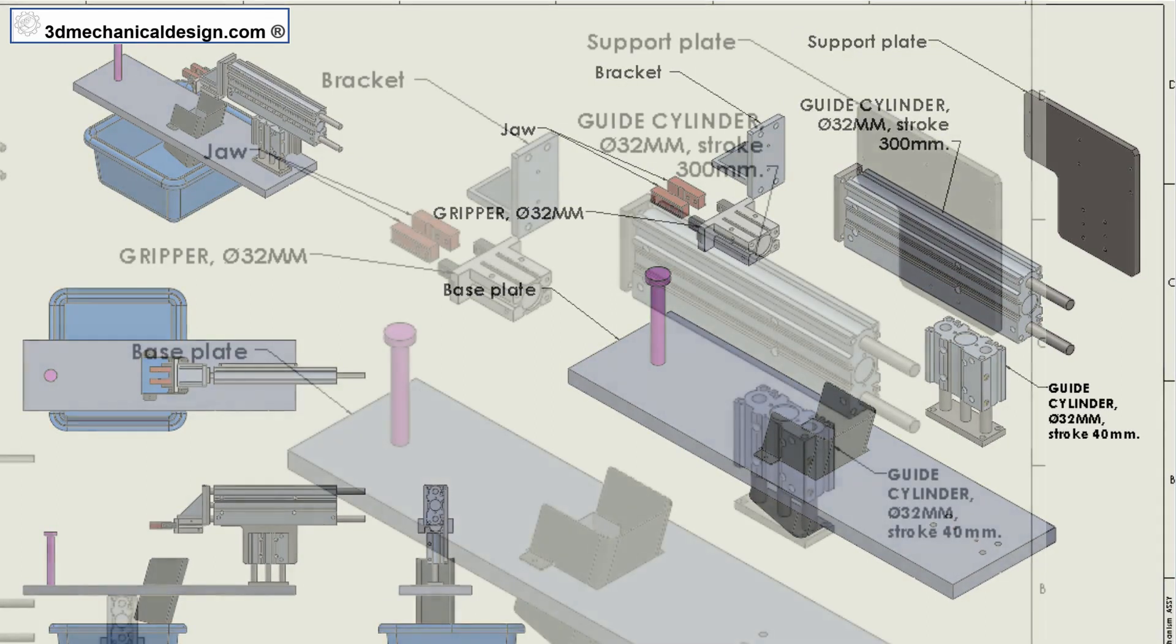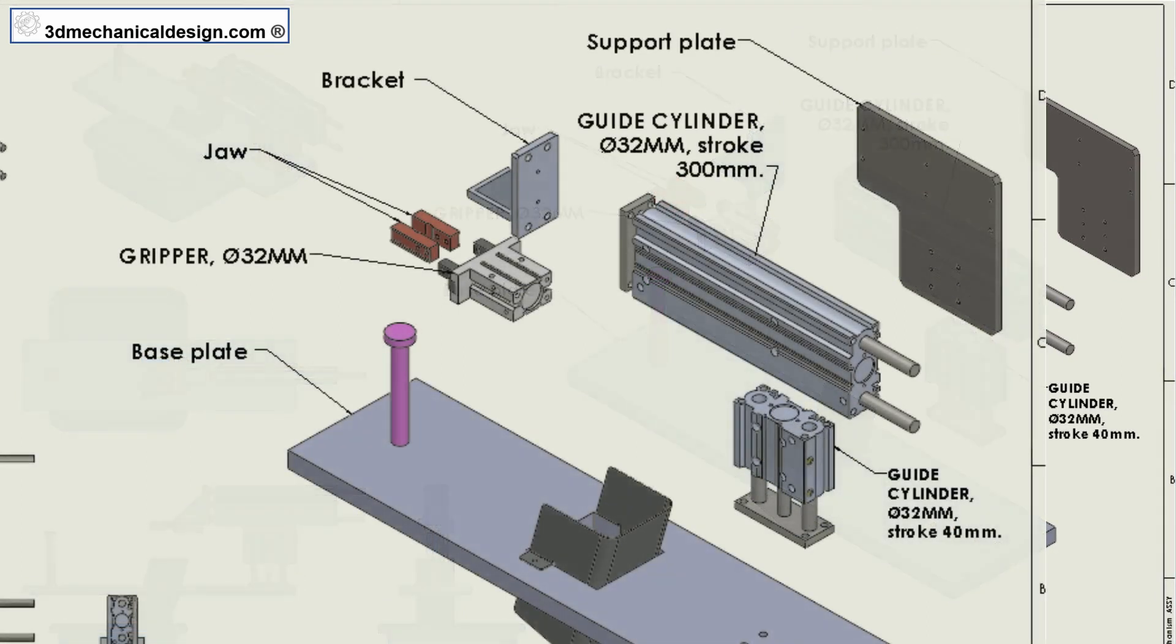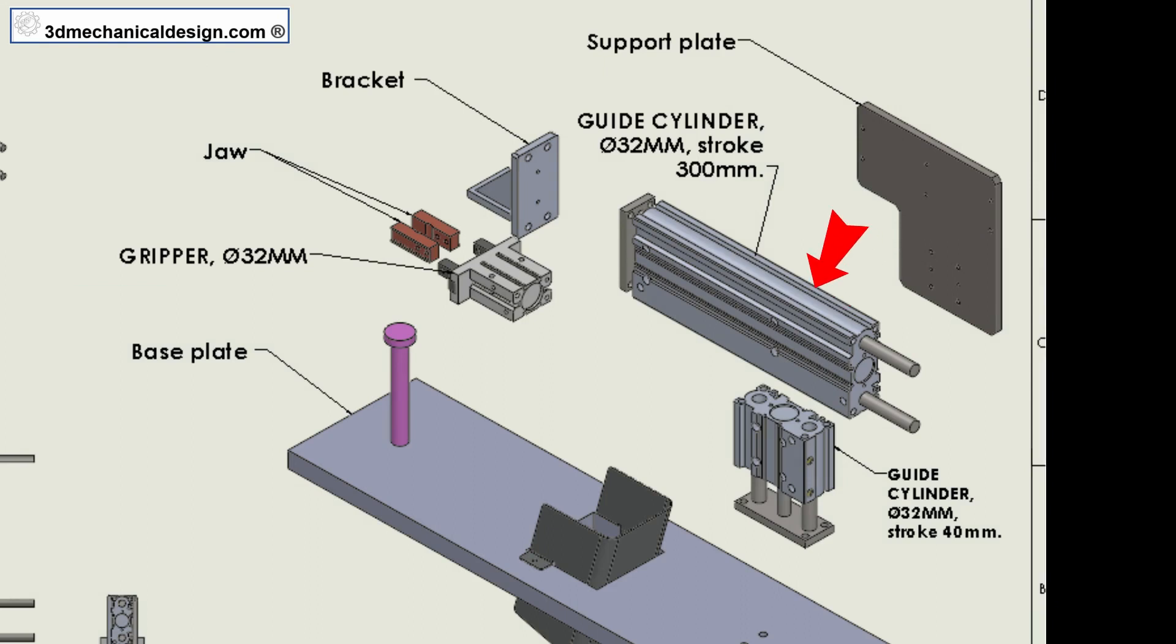The unloading mechanism, or in some applications a loading mechanism, moves horizontally through a cylinder module. I used a guide cylinder, diameter 32mm, and stroke 300mm.